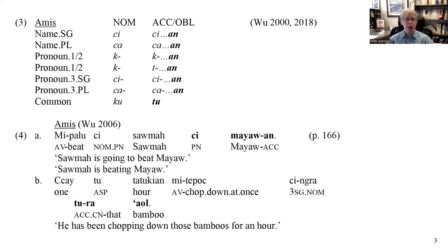Turning to Amis, this shows a similar but slightly more simplified pattern. The -an suffix is found on both pronominals and names. In addition to the -an suffix, there is also an initial element for third persons — the determiner, which also marks nominative case. For first and second persons, we have either a K prefix, which comes from the nominative paradigm, or a T prefix. The T is very interesting and I'll have more to say about this later. Common noun marking is completely different, with the prepositional element to. There's an example in A of a name and in B with a common noun.